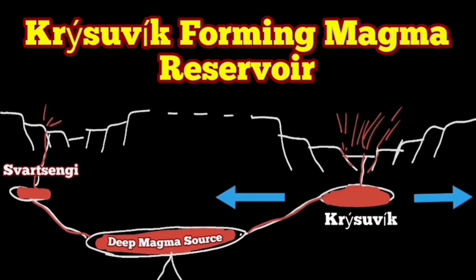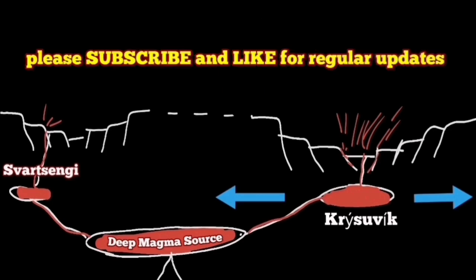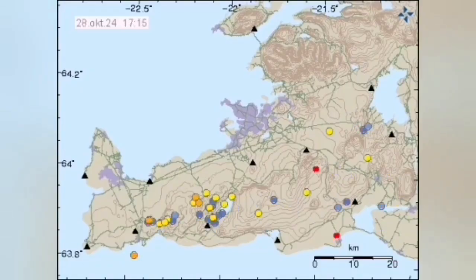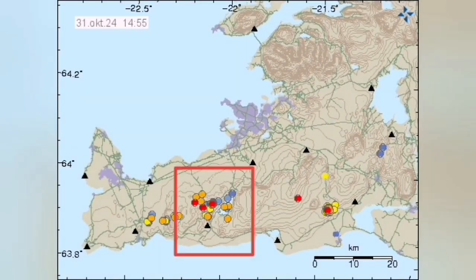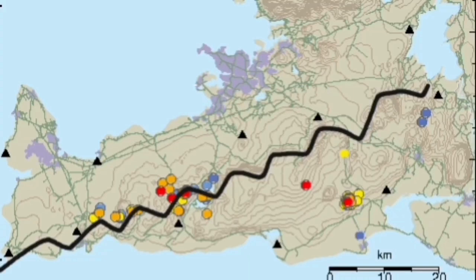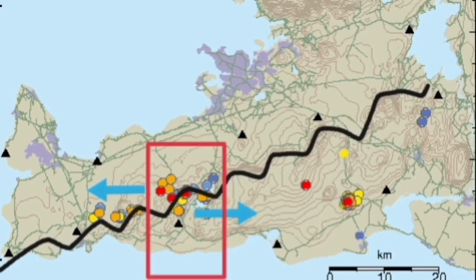Since the end of the last eruption of the Svartsengi volcanic system in August, we are seeing lots of earthquakes in the area of the Reykjanes Peninsula of Iceland. Many of them are concentrated around this lake which we call Kleifarvatn, and that is forming along a series of transform and extension faults that divide the boundary between the Eurasia and North America plates.